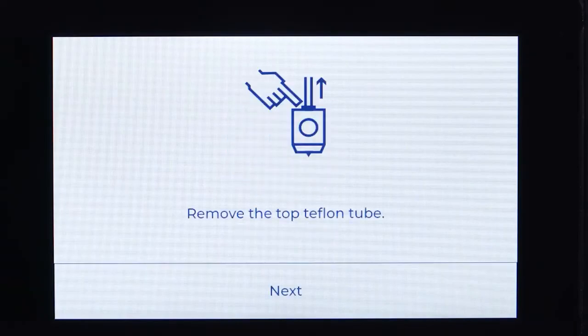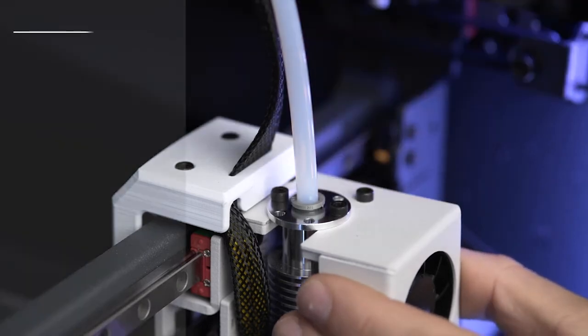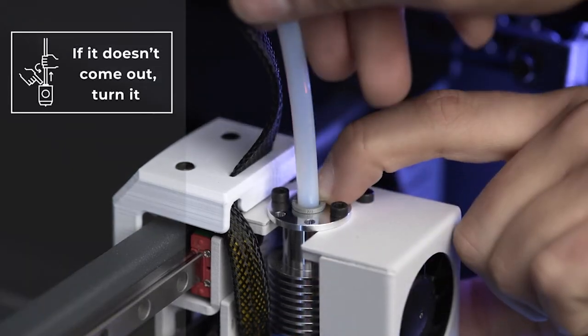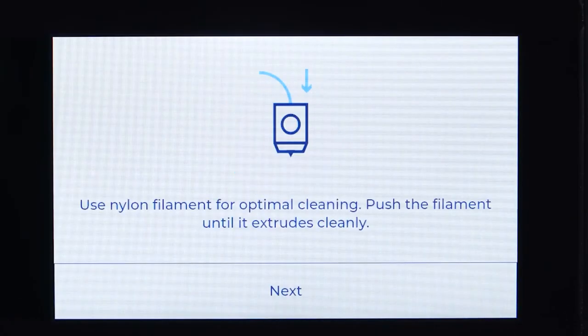Once it is unloaded, disconnect the Bowden tube. To do this, start by removing the coupling clip. Then, while pressing down on the fast connector, slightly press in the Bowden tube and then pull it.